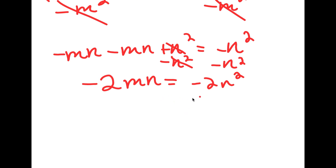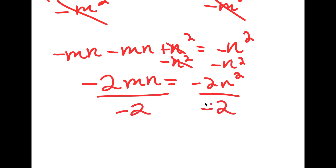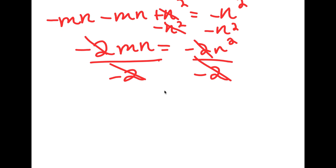From here, I can divide both sides by negative 2. So then these two negative 2s cancel out, and I'm simply left with mn is equal to n squared.